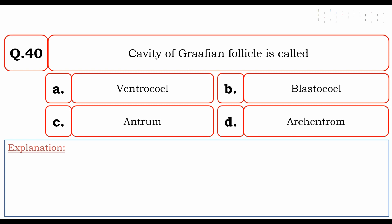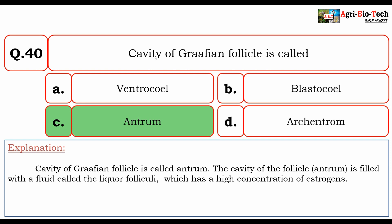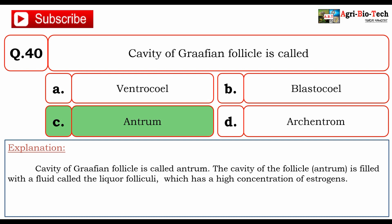Next question: the cavity of the Graafian follicle is called — A) ventricle, B) blastocoele, C) antrum, or D) archenteron. The correct option is C) antrum. The cavity of the Graafian follicle is called antrum, and it is filled with a fluid called liquor folliculi which has a high concentration of oestrogens.